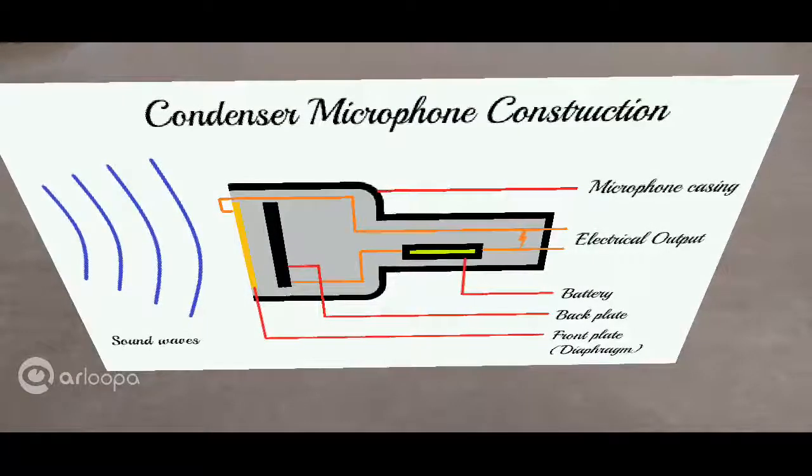Here's the construction of a condenser microphone. The condenser microphone is given the name because it does have a condenser inside it. And a condenser is nothing but a capacitor. The name condenser is obsolete but it's still used in context with the microphone.